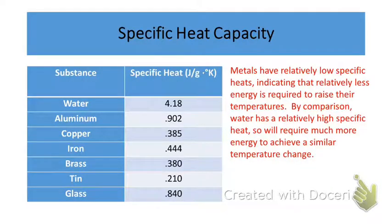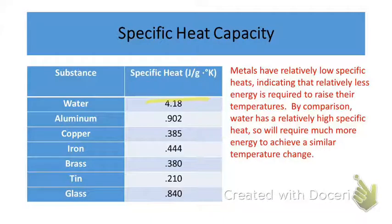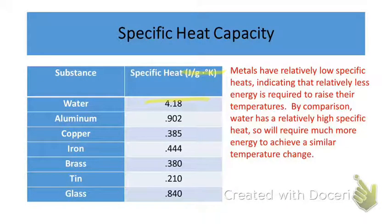Here are some values of specific heat capacities for certain materials: water, metals like aluminum, copper, iron, brass, tin, and the covalent network compound glass, which is made up of silicon dioxide. Water has a very large specific heat compared to all other substances — 4.18 joules per gram kelvin. You should memorize the specific heat of water, as it's a value you'll use often in this class and on exams. It takes 4.18 joules of energy to raise the temperature of one gram of water by one degree.